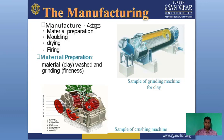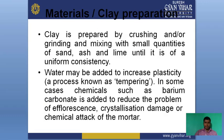In material preparation — the first stage — we collect clay from various places, then we grade it, clean it, and sieve it to make fine particles. Clay is prepared by crushing, grading, and mixing with small quantities of sand, ash, and lime until it is of uniform consistency. Water may be added to increase plasticity, a process known as tempering. Chemicals such as barium carbonate are added to reduce efflorescence, crystallization damage, or chemical attack of the mortar.